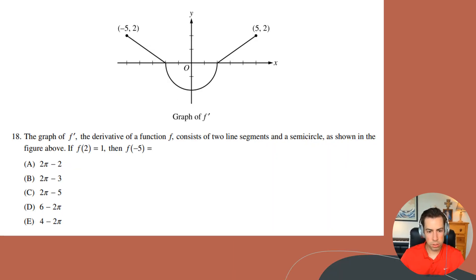Okay, so for this question we're given this graph of f prime, and they're telling us that f prime is the derivative of a function f. It consists of two line segments and a semicircle. As shown above, if f of two equals one, then f of negative five equals what?